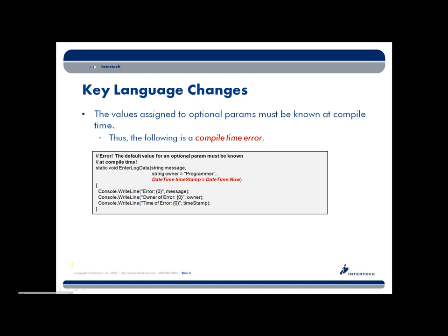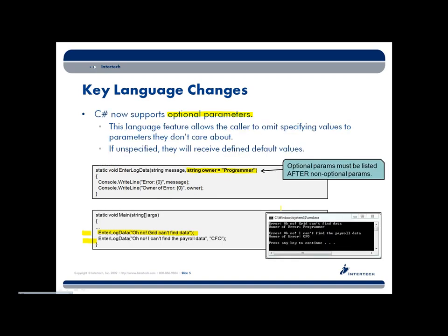One thing which is maybe not obvious is that the value you supply to a default parameter must be understood at compile time. So the part down here in red — when I was first playing around with this, I thought it'd be nice to have a timestamp saying when the error occurred for the error log. But we can't do that because the now property is not known until runtime. So if you attempted to type this in, you would actually get a compile-time error. Another restriction: all optional parameters have to come at the end of a signature. You can't put them prior to non-optional parameters, because then how would we figure out what was optional or if we were actually just skipping over it?